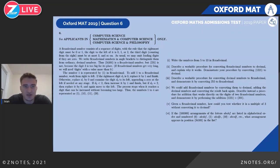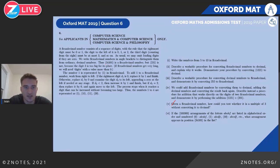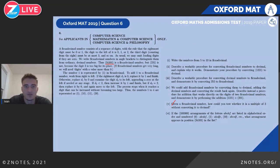We have a flexidecimal number consisting of a sequence of digits with the rule that the rightmost digit must be zero or one, the digit to the left of it is zero, one, or two, and the digit to the left of that is at most three, et cetera. For example, a valid flexidecimal is one-zero: that's less than two, the next is less than three, four is less than or equal to four, and three is less than five.